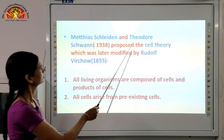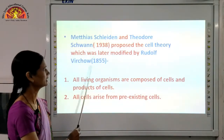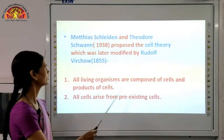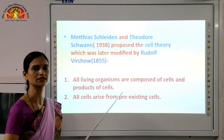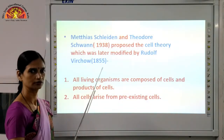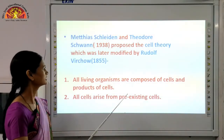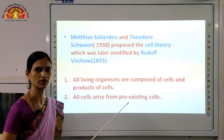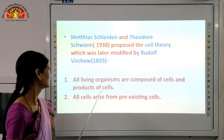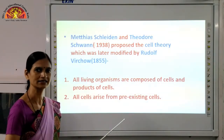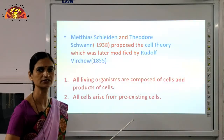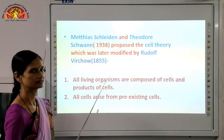Cell theory was given by Schleiden and Schwann, and then it was modified by Rudolf Virchow in 1855. Additional points were added: all organisms are composed of cells and products of cells, meaning all living organisms are made up of cells. And new cells arise from pre-existing cells — meaning the cell divides and produces new cells. This is the cell theory.